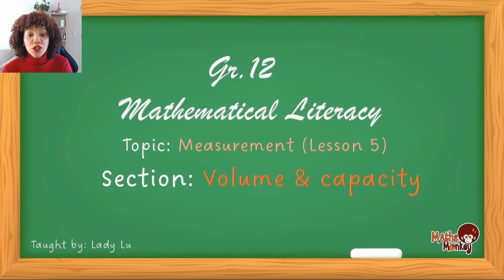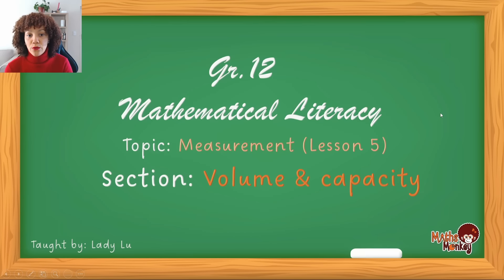Alright, grade 12. So this is the fifth lesson under the measurement topic and we're going to be looking at volume and capacity. I always like to start with making sure you understand what these terms actually mean. So if we look at volume, volume is the entire space taken up by a three-dimensional shape.